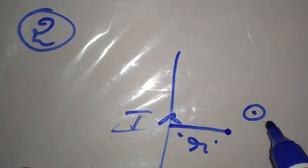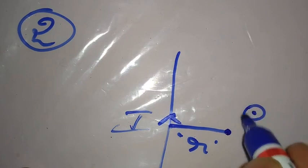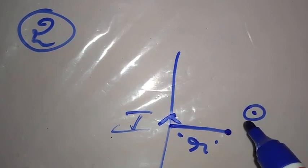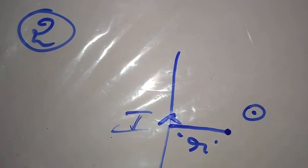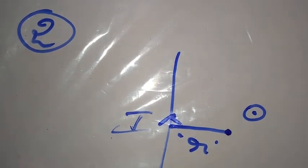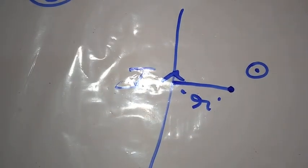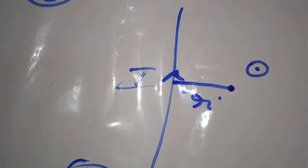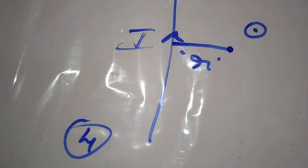Finally we can conclude that the magnetic field is perpendicular to the plane containing the conductor and the point. The correct answer for the second problem is option 4.